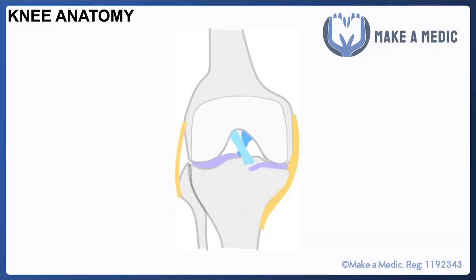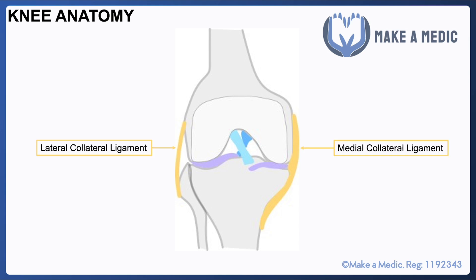The knee joint is a hinge joint that needs to have a decent range of motion whilst also being able to bear the forces of a large proportion of your body weight acting through the knee. There are a number of ligaments that go into reinforcing the knee joint. Starting from the outside in, we have the medial and lateral collateral ligaments.